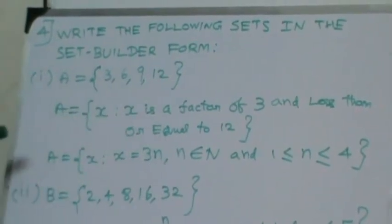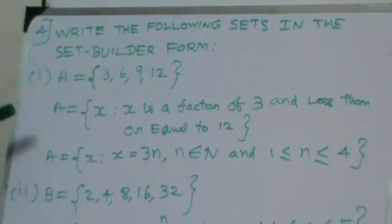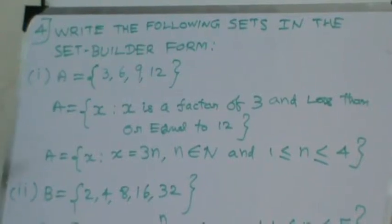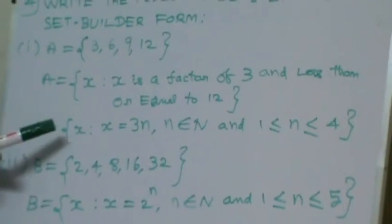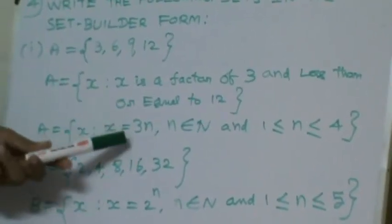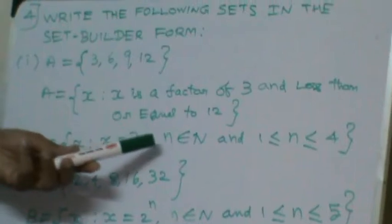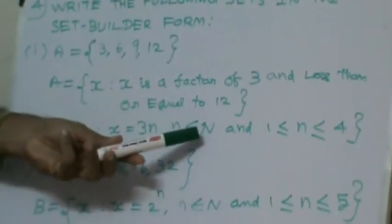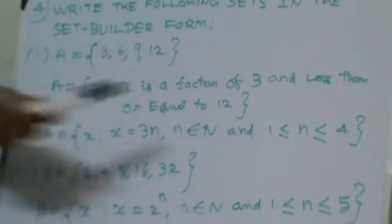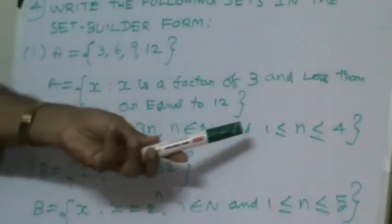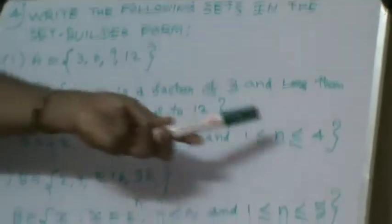The same thing we can represent in another way also in set builder form. A is equal to set of all x such that x equal to 3n where n belongs to N. This capital N stands for set of natural numbers. And 1 less than or equal to n less than or equal to 4.